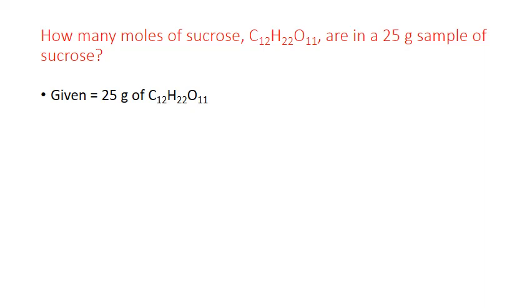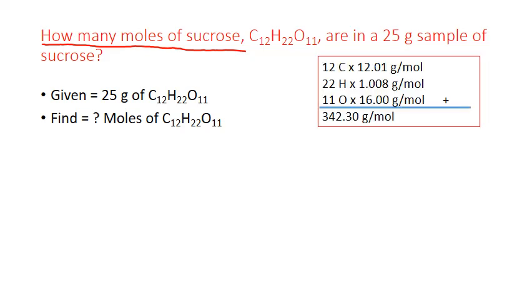Next, we need to know our final units. So we look at what we're being asked for, and it's how many moles of sucrose. So that's our final unit. We need an equivalent statement that relates moles to grams, and we know that for compounds, one mole of any substance equals the formula mass of that substance in units of grams. So we have to calculate the formula mass. That's the first thing.